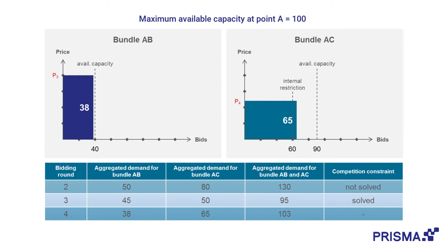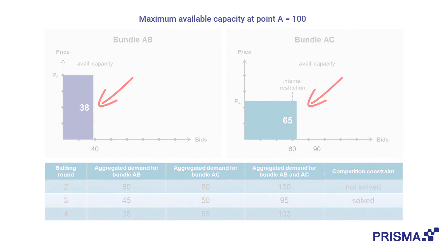At auction round 4, with the third large price step being applied, the aggregated demand at bundle AB results in an undersell, and after the first small price step at bundle AC, the aggregated demand results in an oversell. Therefore, the auction at bundle AB proceeds with the first small price step and the auction at bundle AC proceeds with the second small price step.